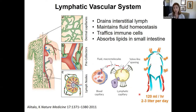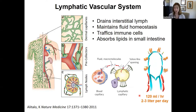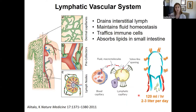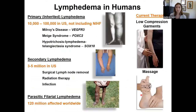In an adult, that's about 120 milliliters of fluid per hour. This fluid is called lymph, and that equates to two to three liters per day. So the lymphatics are really critical, and you can envision that if there are deficits in lymphatic function, you very quickly develop lymphedema.